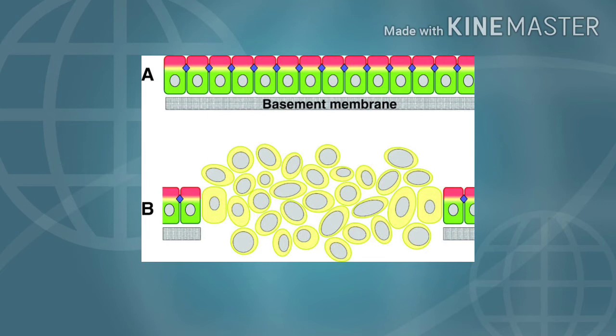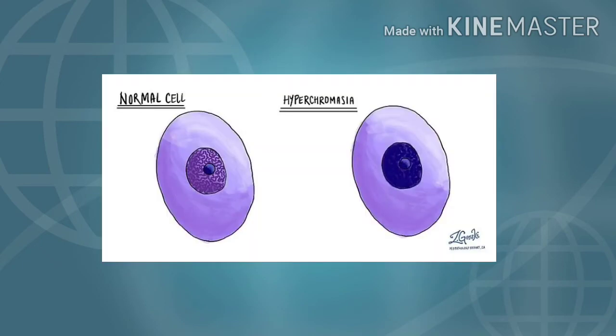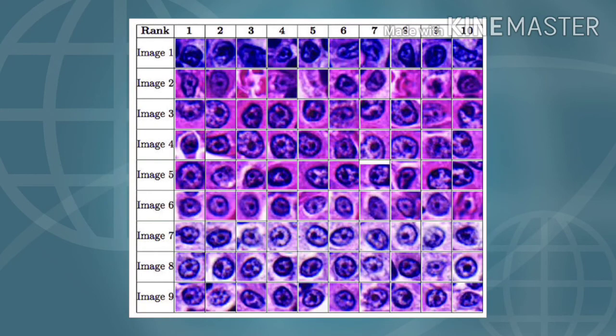Next is loss of polarity - that means there is disturbance in the orientation of cells. Also there is abnormal nuclear morphology like hyperchromatia, which is dark staining of the nuclear chromatin. Also there is presence of clumping of chromatin along the nuclear membrane, resulting in prominent appearing nucleoli.